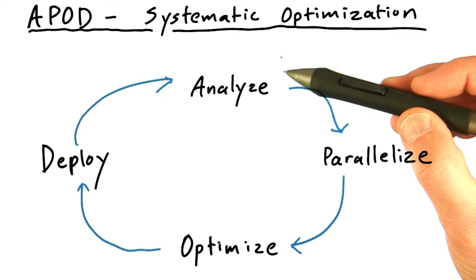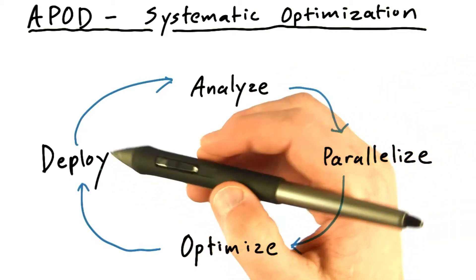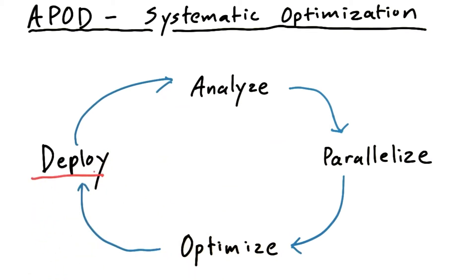The point is that we want to break down the process of optimization into several steps and to remember not to short-circuit the really important one, which is to actually deploy the optimizations that you've made into the real world, get some feedback, see how they're performing on real-world datasets.